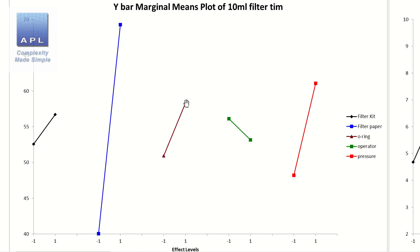That dramatic effect on pressure means it needs to be fixed — it's important. Now, you would decide whether the O-ring is important enough, along with the filter kit. The operator is making the least amount of difference, which is very good, because it means accidental variability isn't changing your result too much. You don't have to worry too much about the operator, other than ensuring they follow the basic procedures around pressure and filter paper.